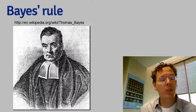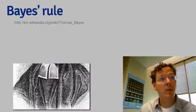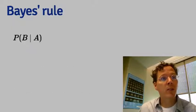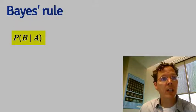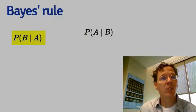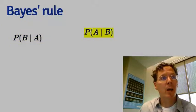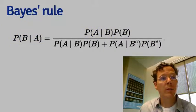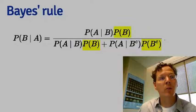Bayes' rule allows us to reverse the role of the conditioning set in the set that we want the probability of. So imagine the event that we want the probability of B given A, when we have or can easily calculate the probability of A given B. Bayes' rule says you can do that — you can relate B given A to A given B, but you need some other information: you need the probability of B marginalized over A.